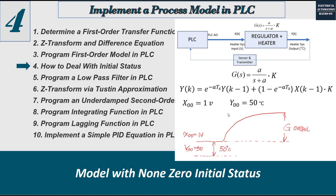But in real systems, especially in the industrial area, a lot of cases use the first-order model to represent a heater system. In 99% of those systems, the initial status is not zero — even if your input is zero, the output temperature is not zero. At least it should be at ambient temperature, so definitely the output of your initial status is not zero.